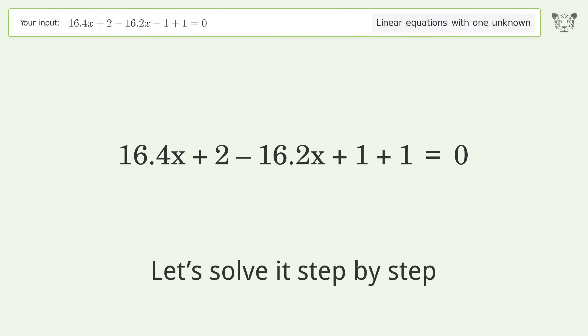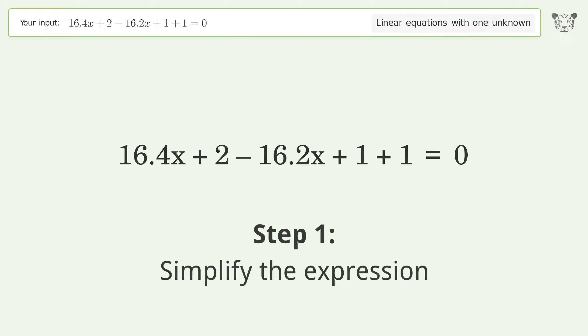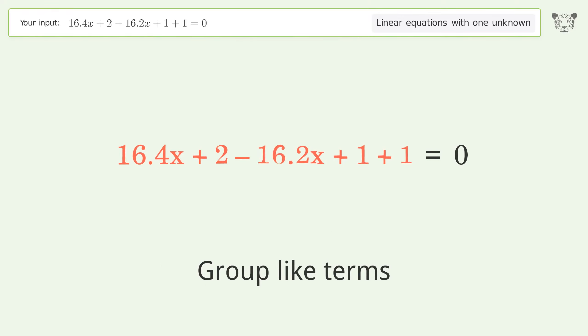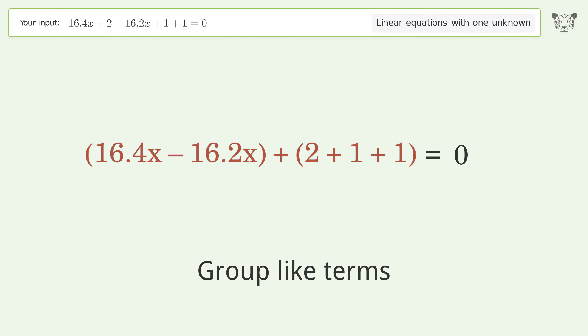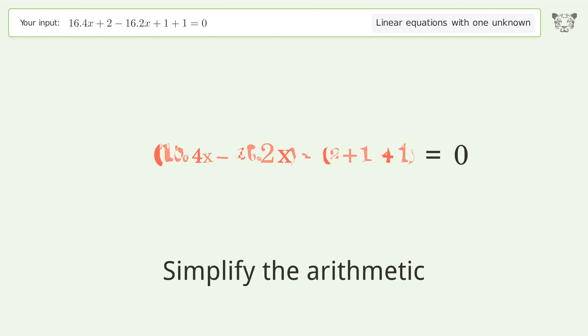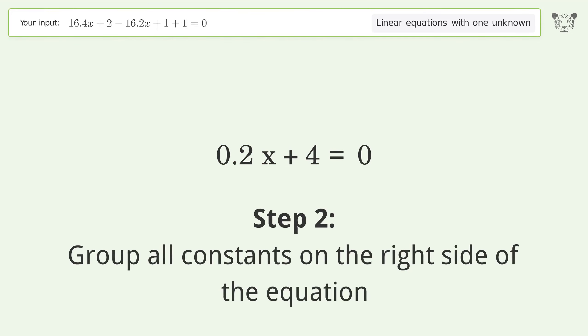Let's solve it step by step. Simplify the expression, group like terms, simplify the arithmetic, then group all constants on the right side of the equation.